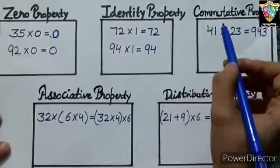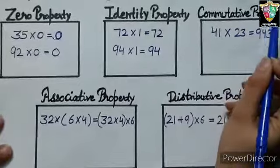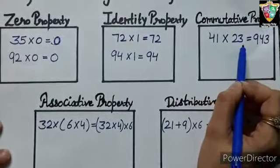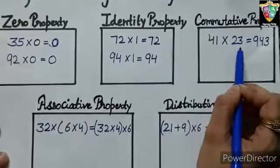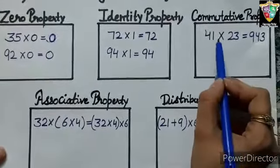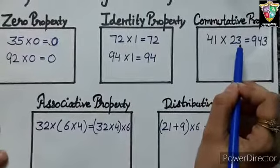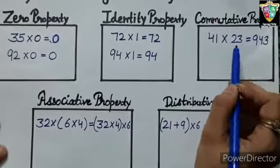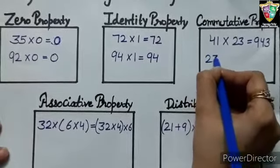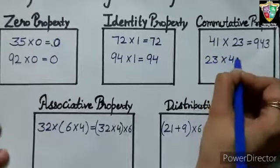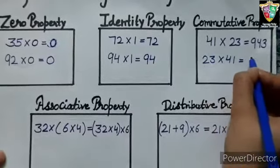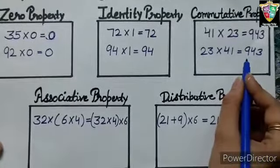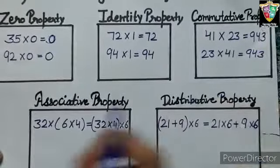Now third property, commutative property of multiplication. The product of two numbers remains the same even if we change the order of the numbers. 41 multiplied by 23 equals 943. Similarly, 23 multiplied by 41 will be 943. The product will remain the same.